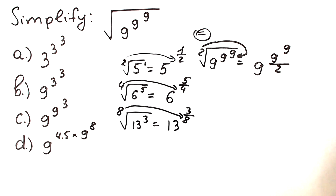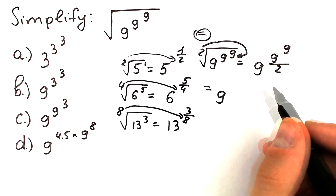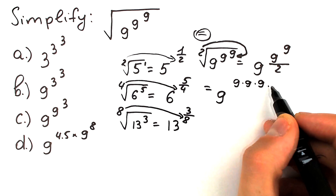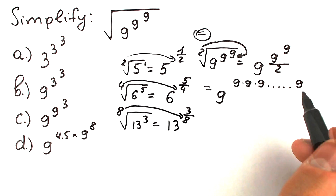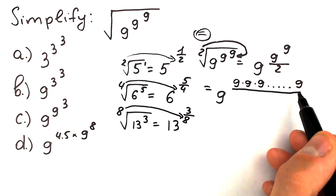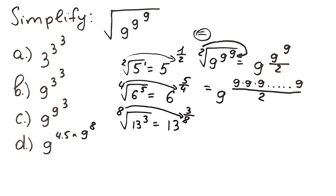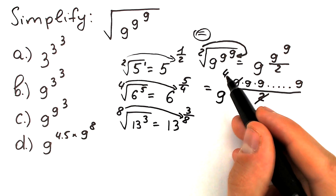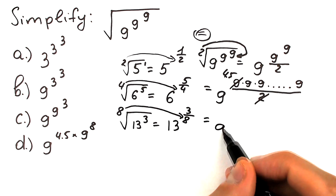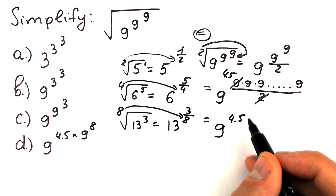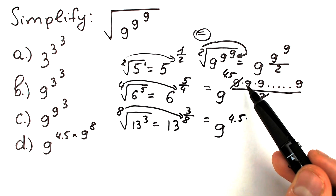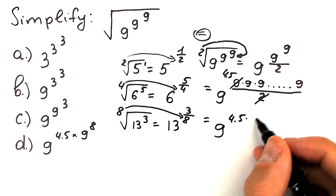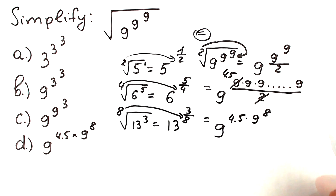Now let's try to simplify this a little bit. We have 9 to the power of 9 to the power 9, which is like a long product: 9 times 9 times 9, many nines. So right here we have 9 times that whole product, divided by 2. To divide, we cancel this 2 with one of those 9s, giving us 4.5. This equals 9 to the power 4.5 times 9 to the power 8 — because we had 9 to the power 9 and canceled one factor with the 2, leaving 9 to the power 8.